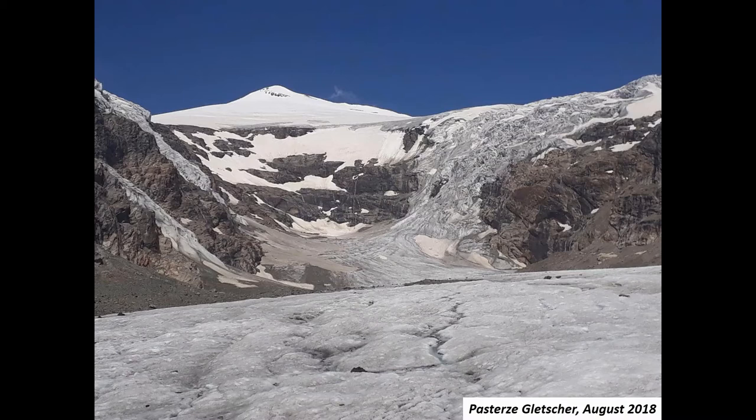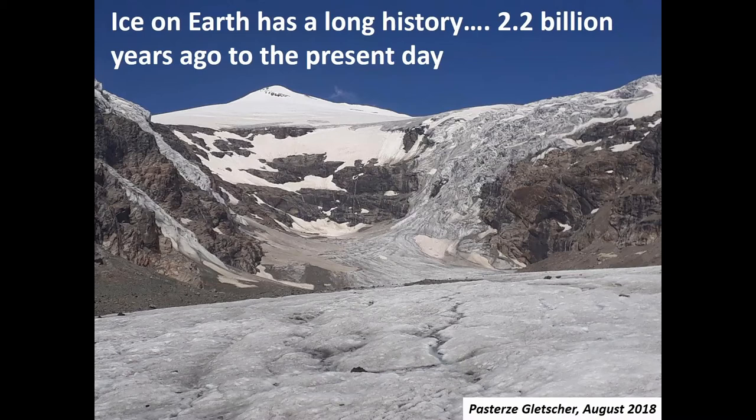When you walk on the glacier, what you notice is that the surface is not entirely white and icy and clean — it looks a little bit different. What we're interested in is how this ice erodes, transports, and then releases material as it melts.